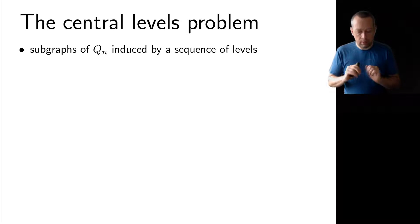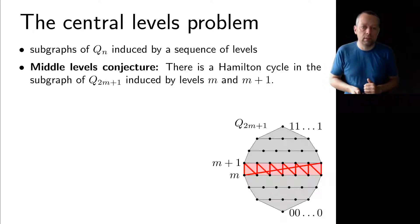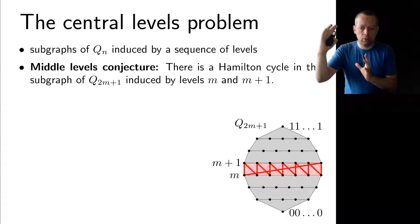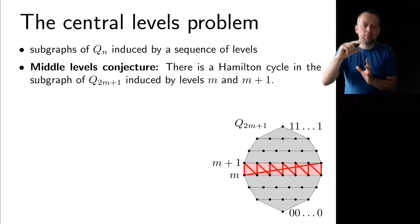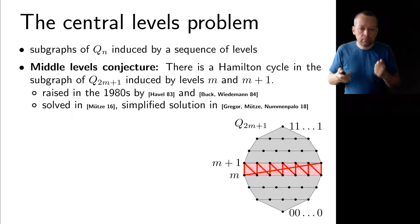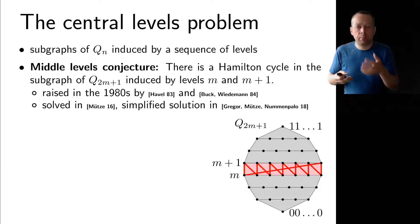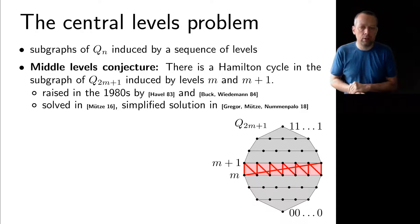Since we have now seen this classical result for the whole cube, the focus shifts to subgraphs of the cube defined by sequences of levels. One famous instance is the middle levels conjecture: for the cube of odd dimension 2m+1, look at the two middle levels m and m+1, and ask whether the induced subgraph has a Hamilton cycle. This conjecture was raised in the 1980s by Havel, Buck, and Wiedemann, was finally solved four years ago, and we presented a simplified proof. It is now a theorem: there is a Hamilton cycle between the middle two levels of the odd-dimensional cube for every m.